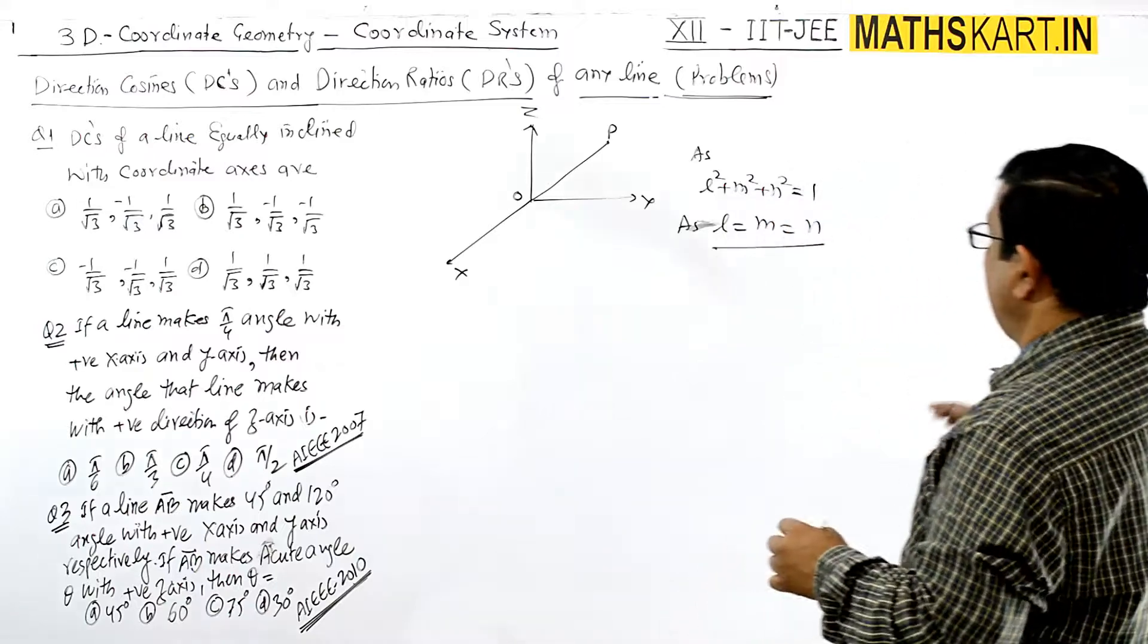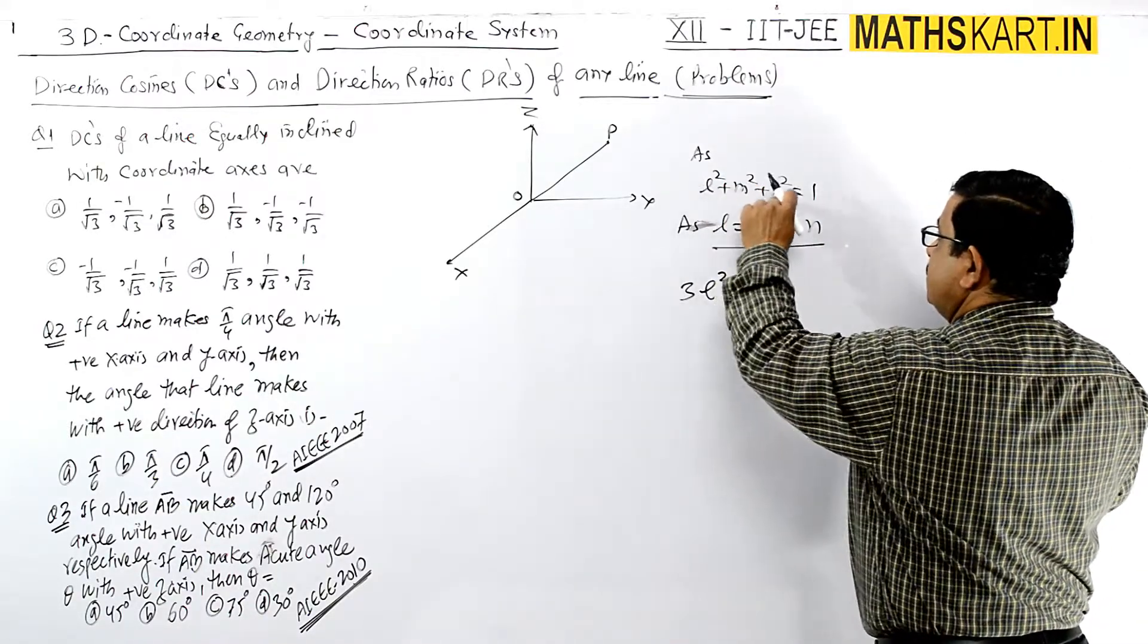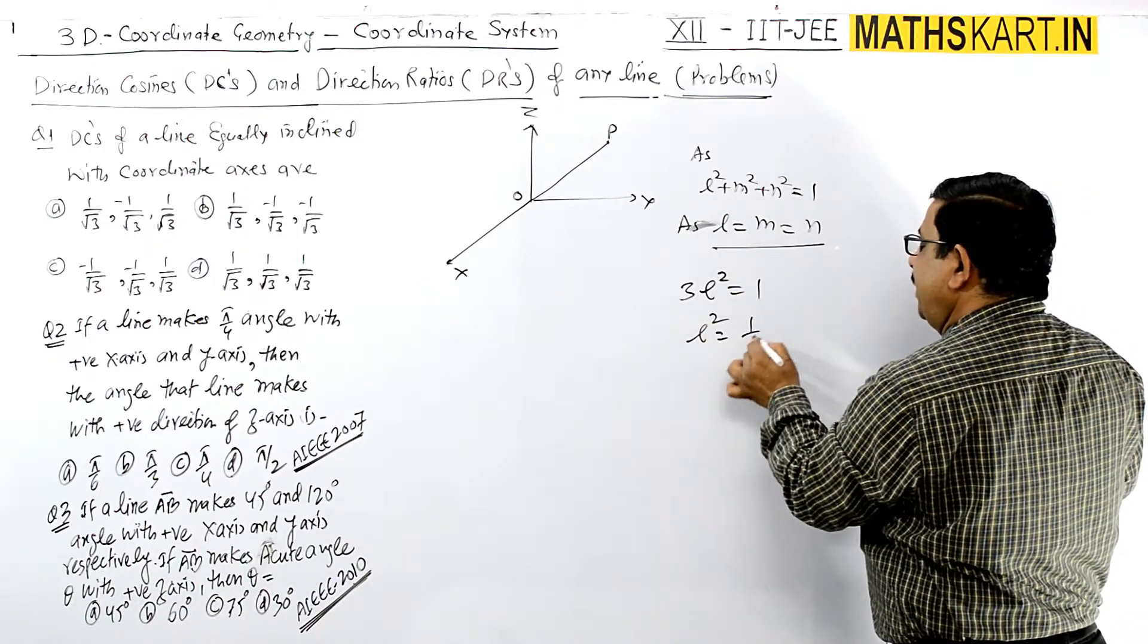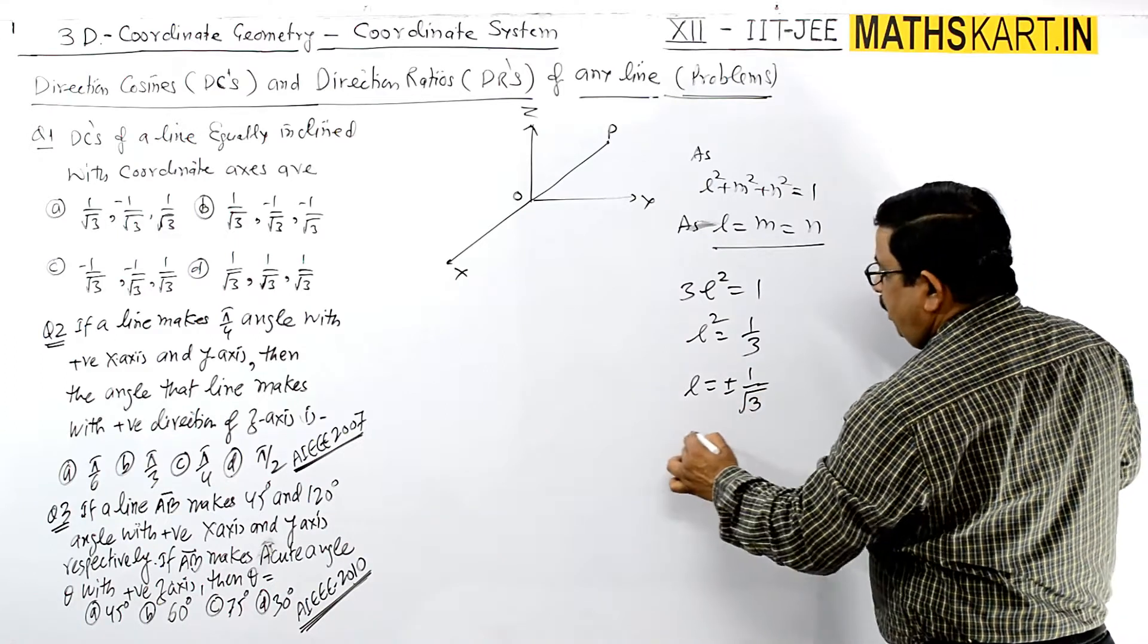Here you can see 3L² = 1, so L² = 1/3, which gives L = ±1/√3.